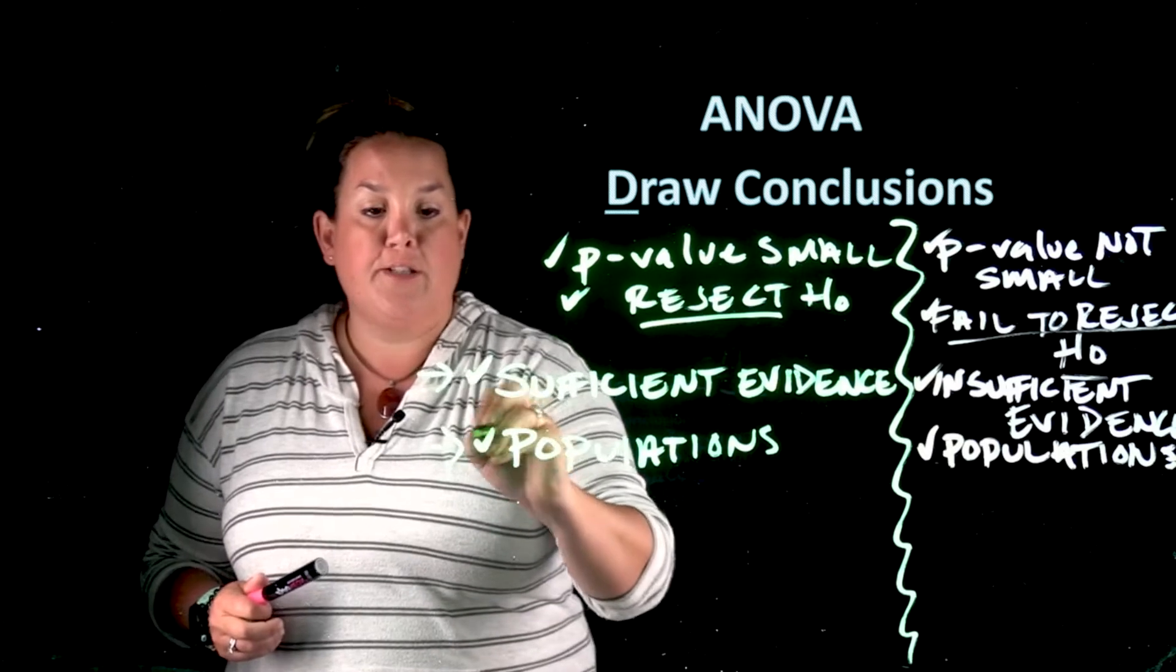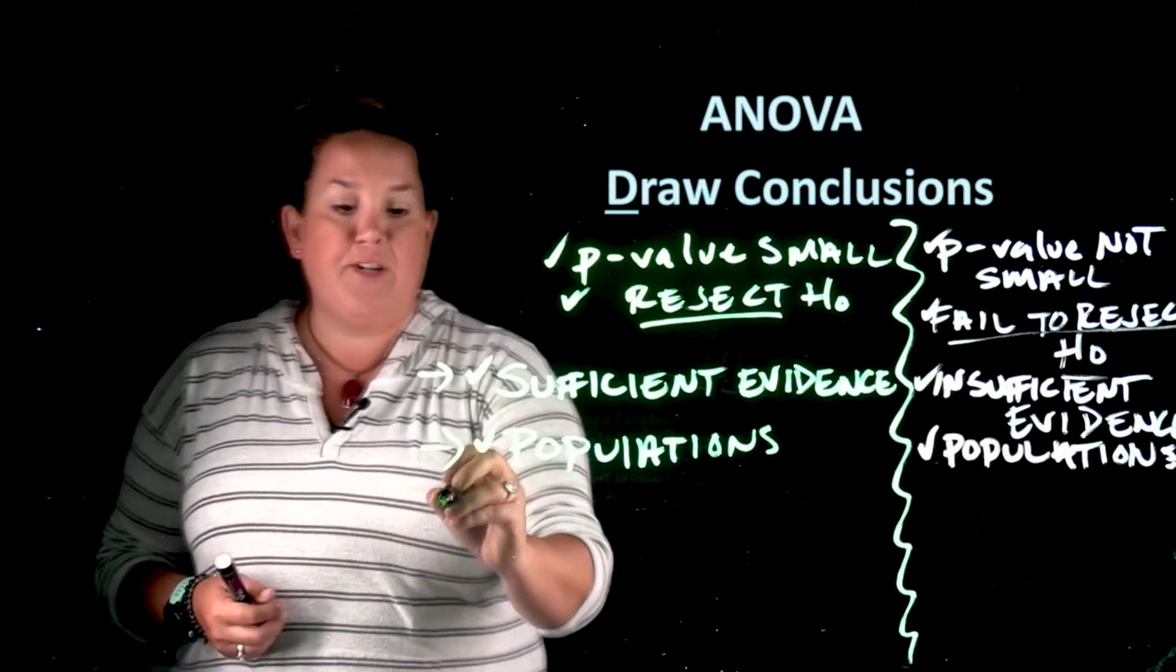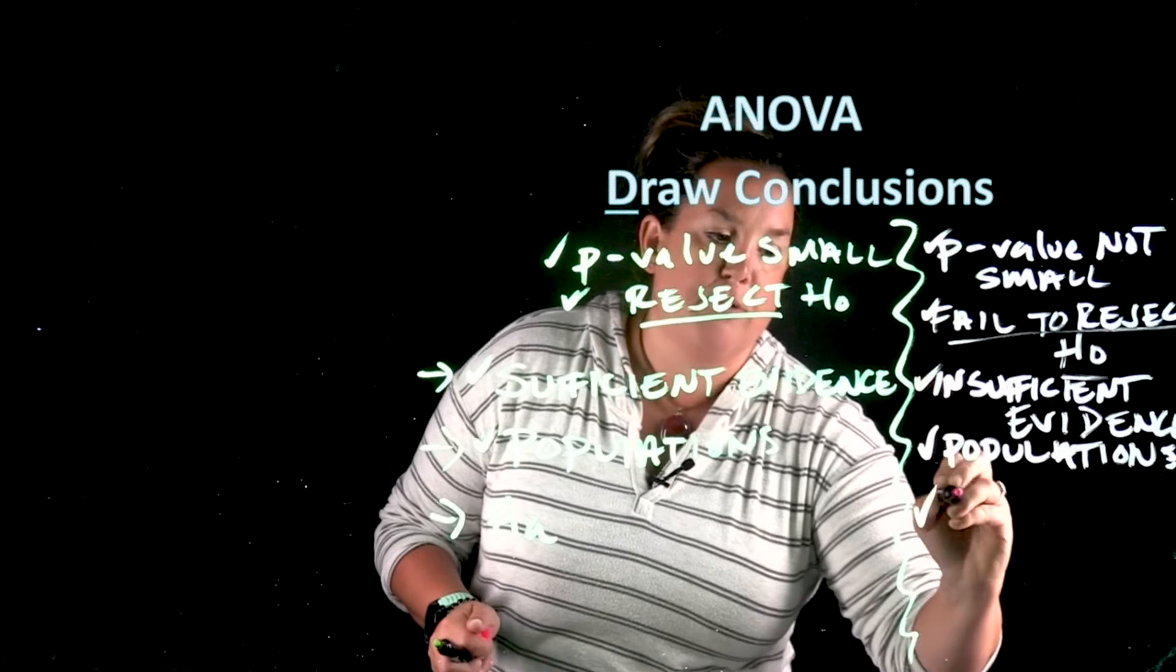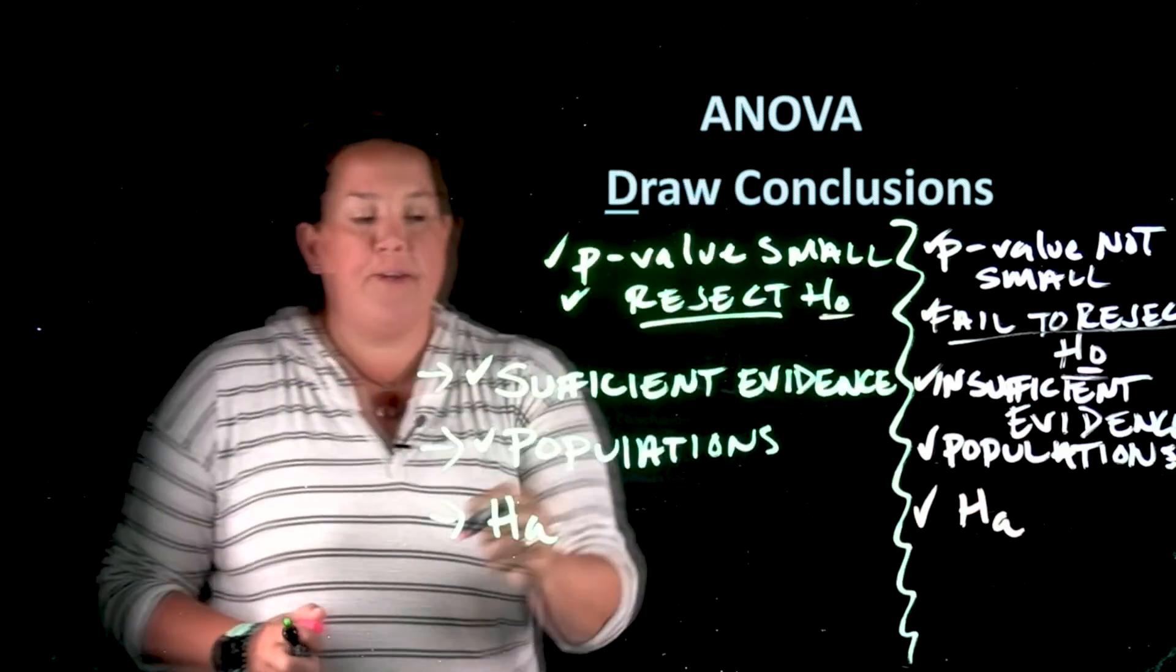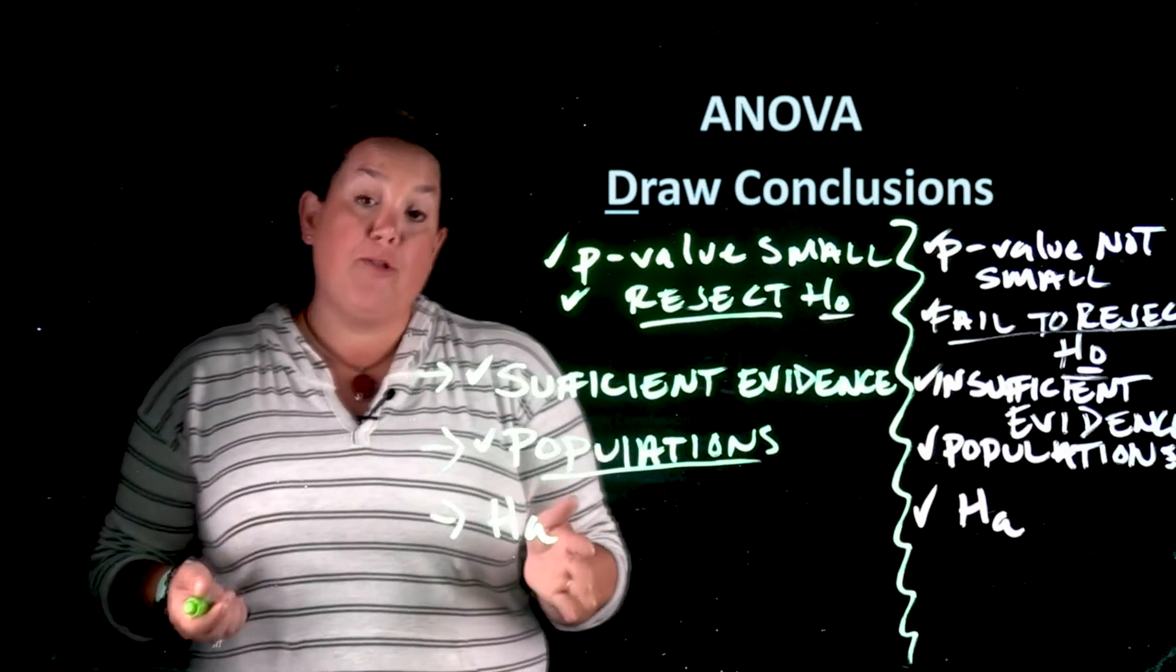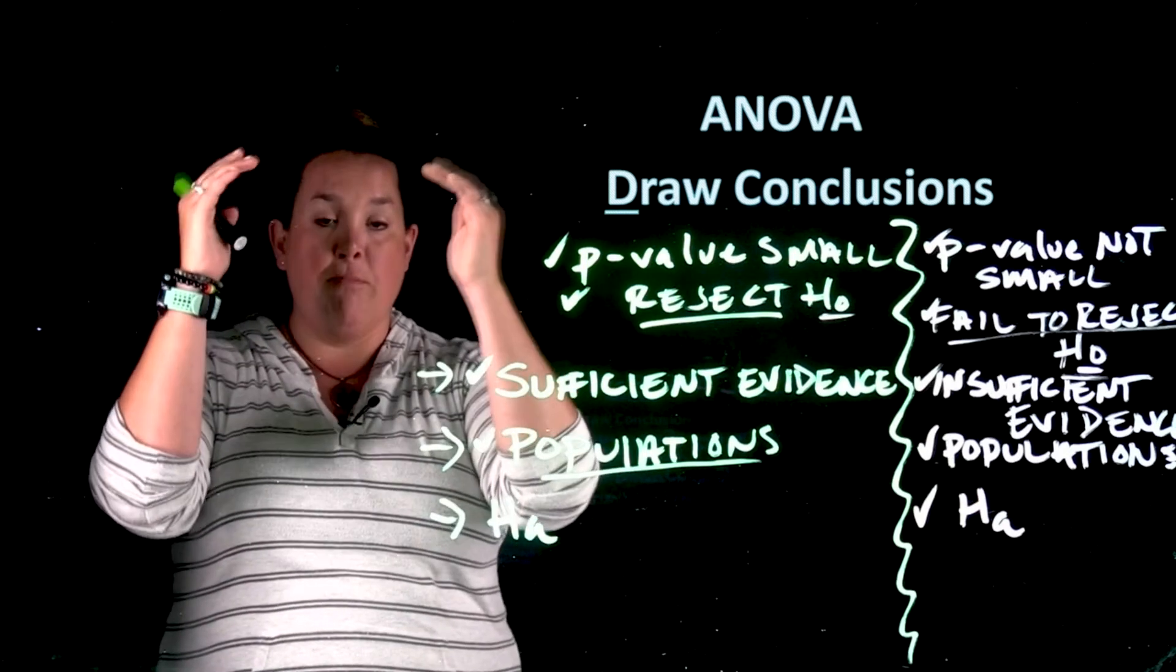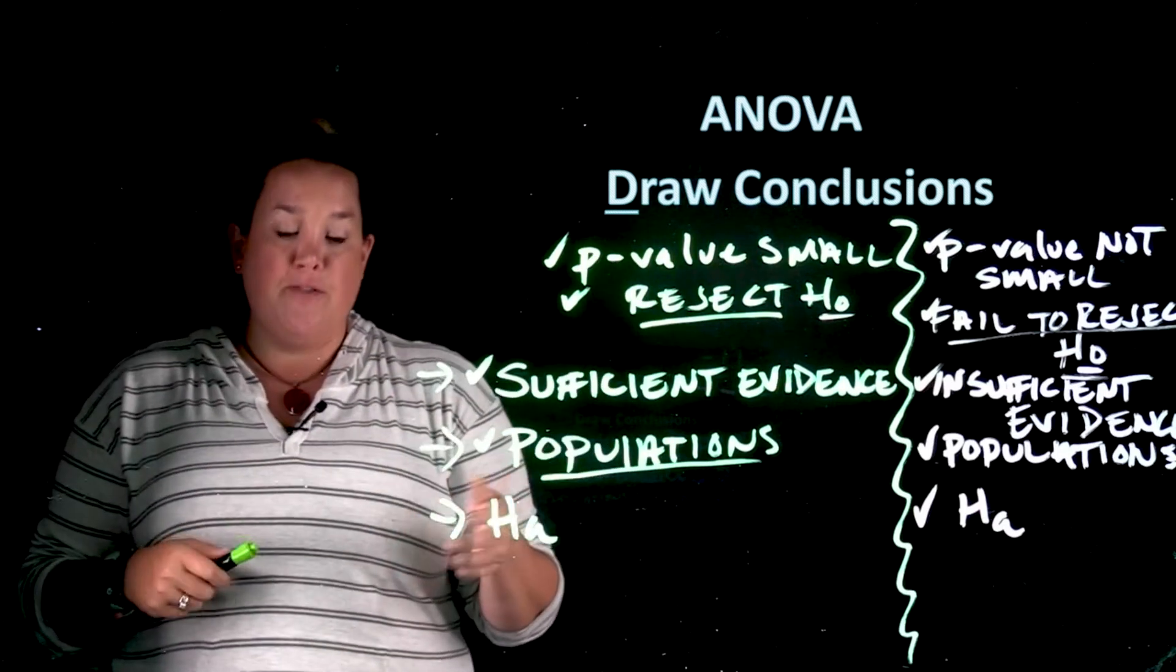So that we need, one, two, and then the third thing that we need is for you to restate the alternative. And that's true over here as well. Remember that with these problems you always make a decision on the null, but then you state how much evidence you have for the alternative. So for these alternatives, remember that they're written kind of interestingly.